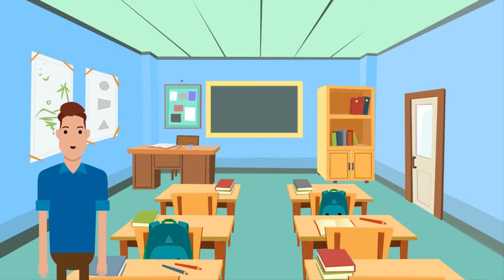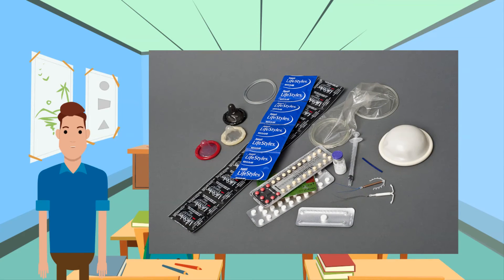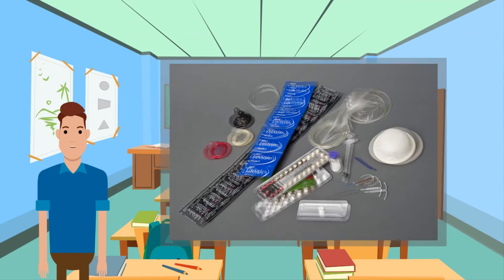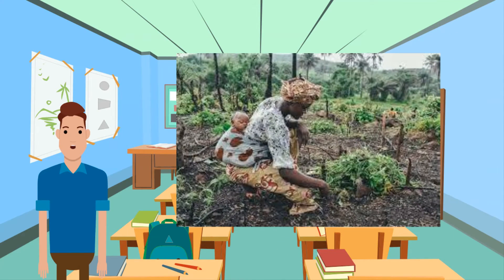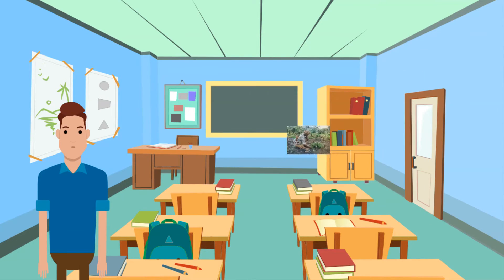The birth rate is higher where there is a high proportion of women of reproductive age (15 to 49). High infant mortality rates encourage parents to have more children. The knowledge and use of contraception affects birth rate. Birth rates remain high if children are needed to work in agriculture or to look after their parents in old age. Birth control programs can also be important.